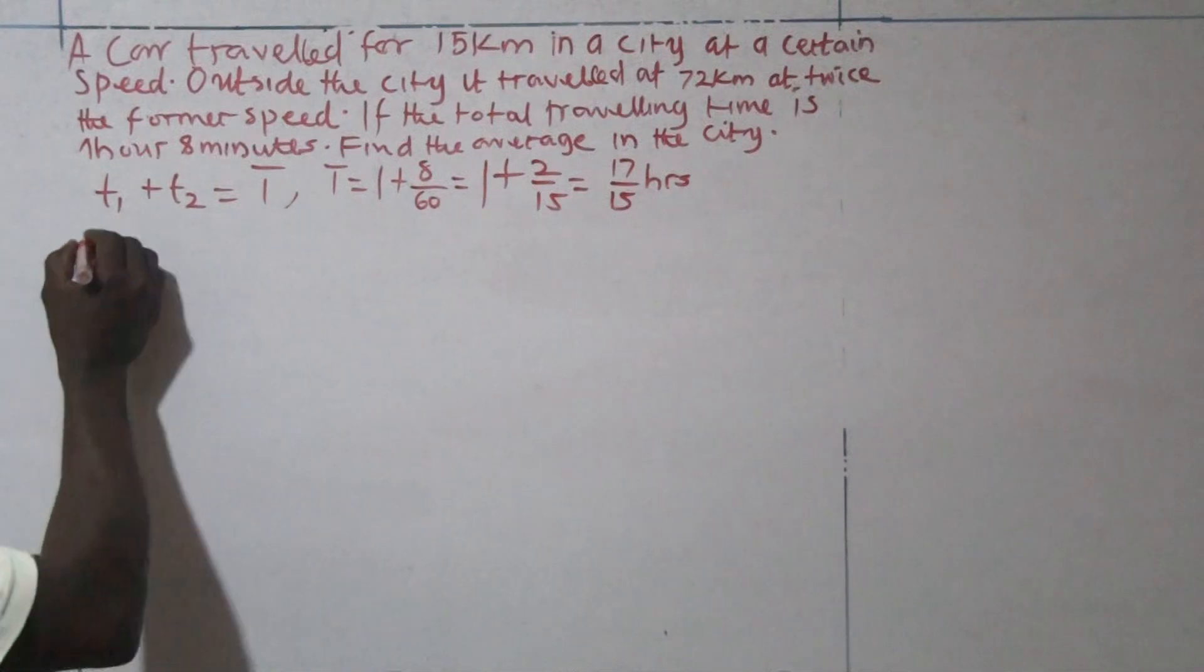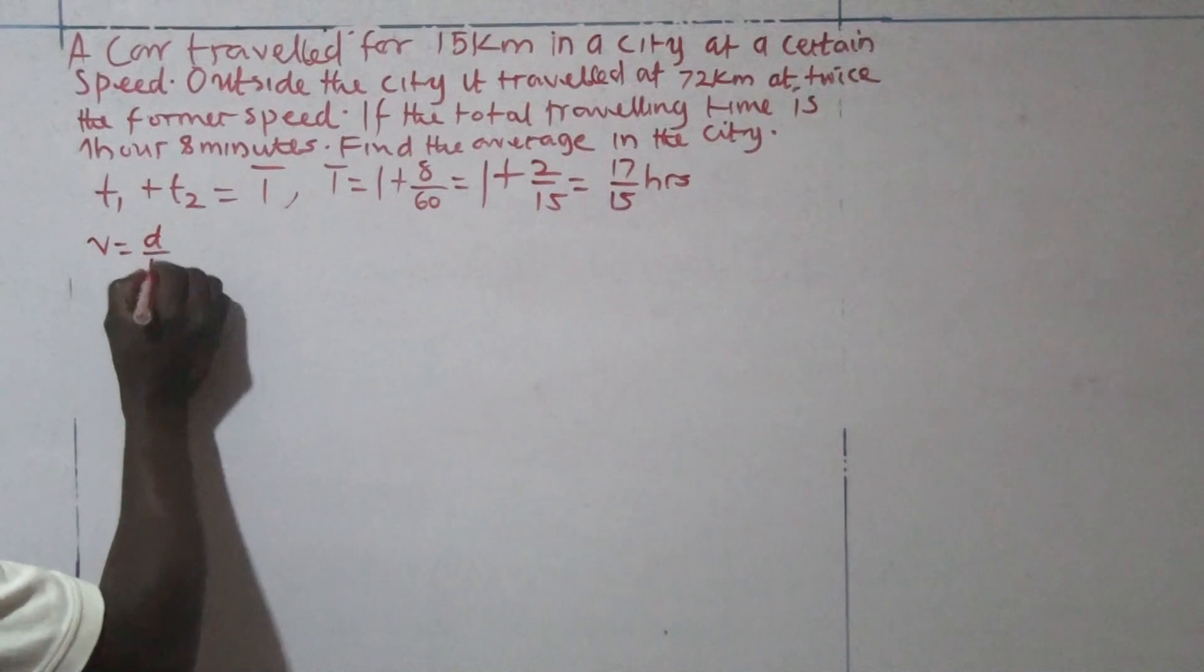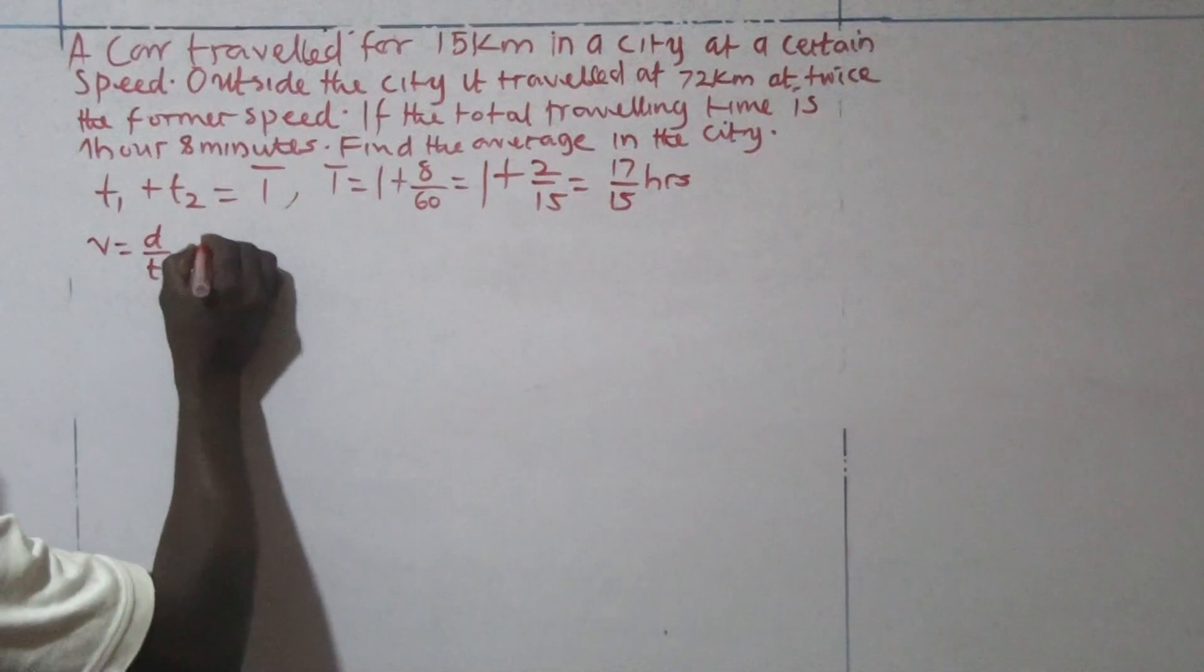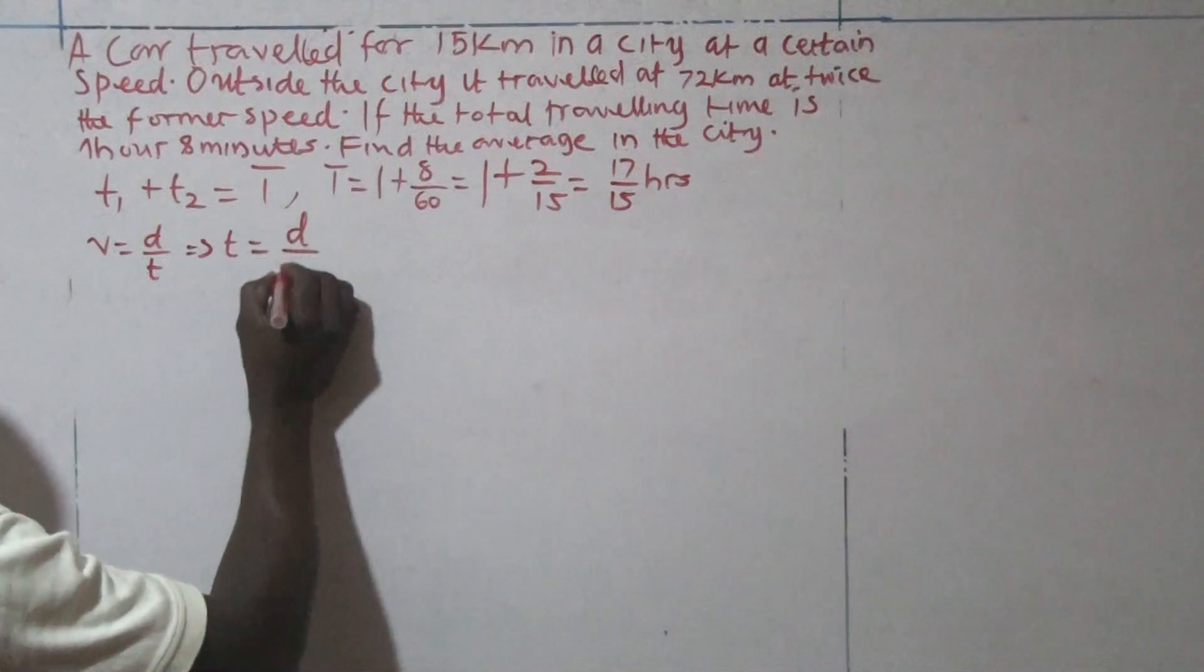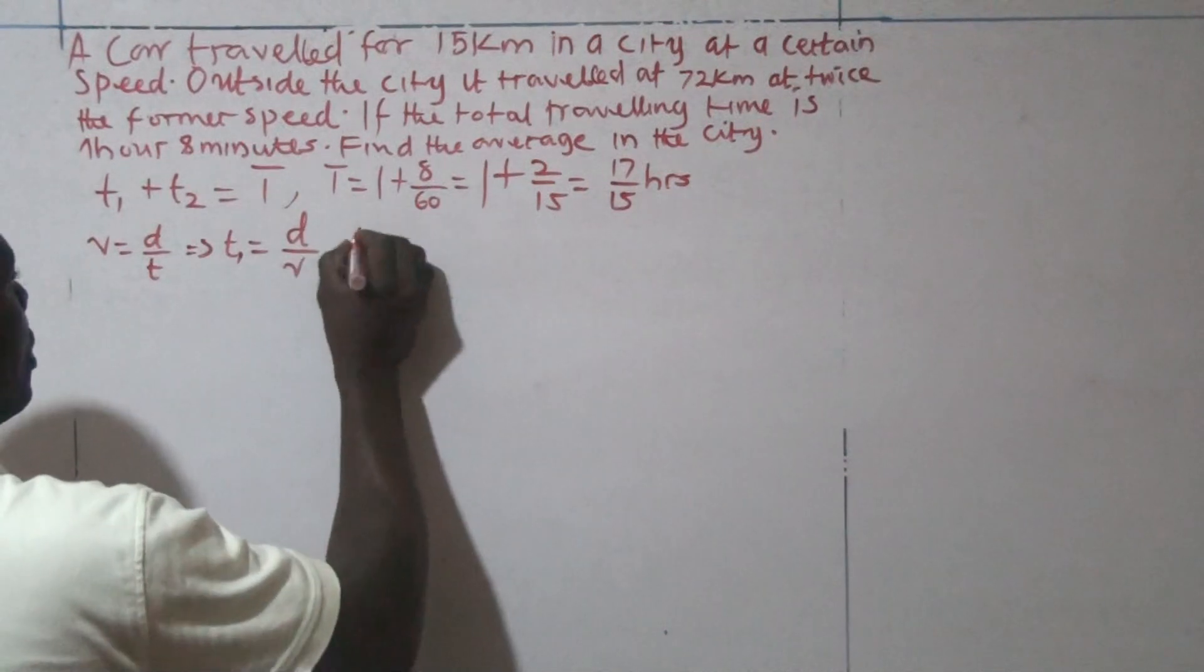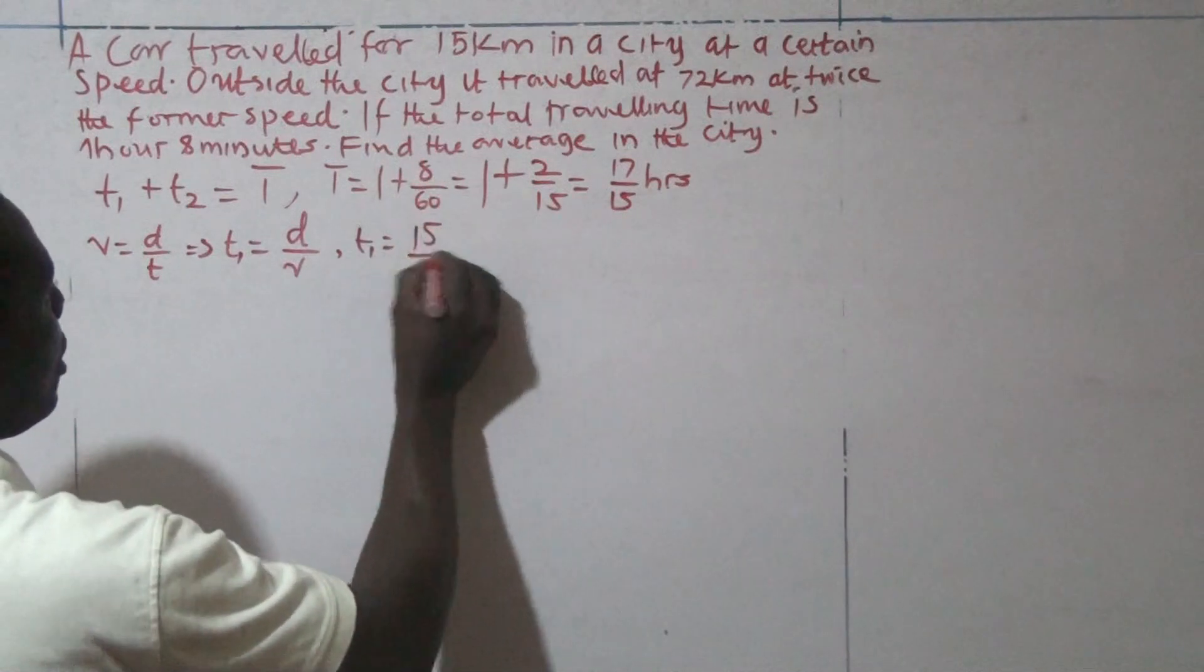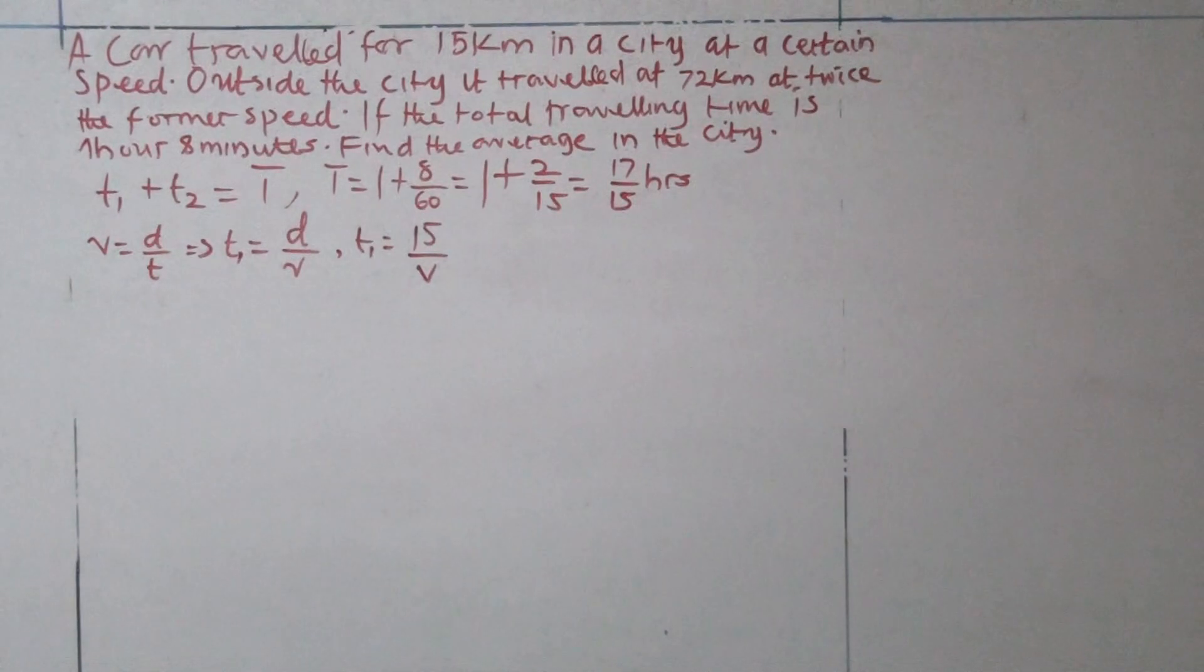We know that speed is distance traveled over the time taken. So time here, if we are making time the subject of the formula, time will become the distance over speed. For the first part of the journey, which we assume is T1, the distance there is 15 kilometers. The speed here, assume it to be V.